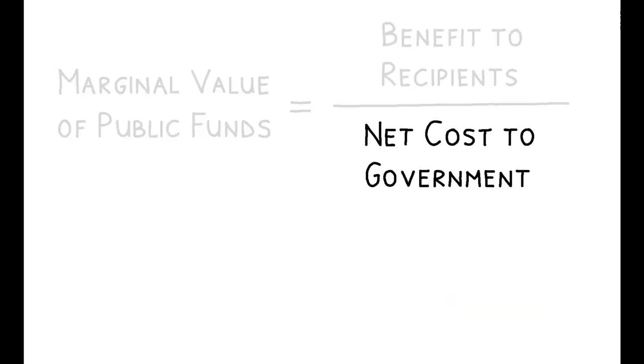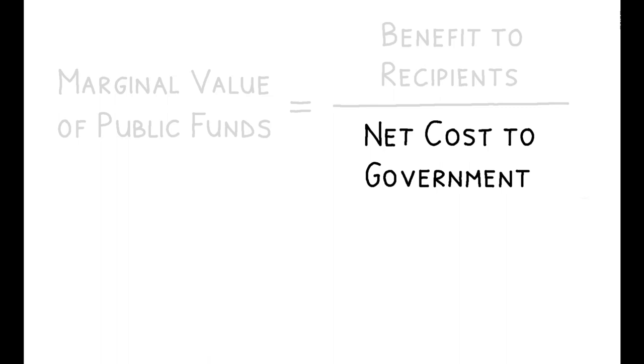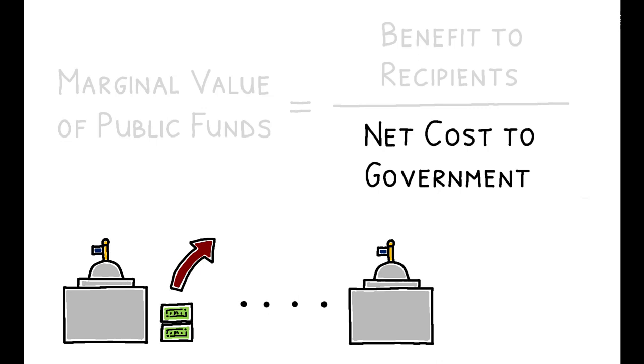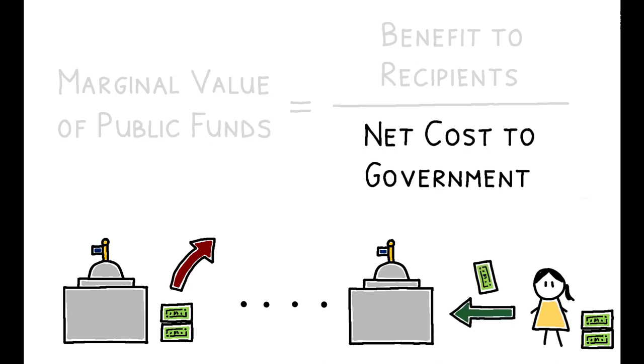Importantly, this denominator incorporates both the upfront costs of a given policy, as well as any long-run effects on the government's budget. If a policy increases recipients' incomes in the long run, this leads to higher tax revenue for the government, which lowers the policy's net cost.